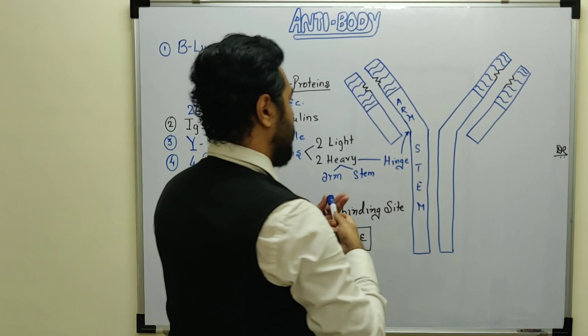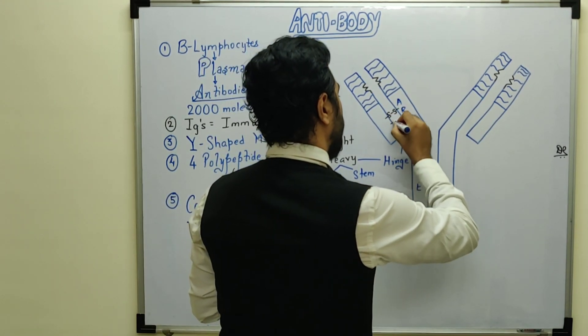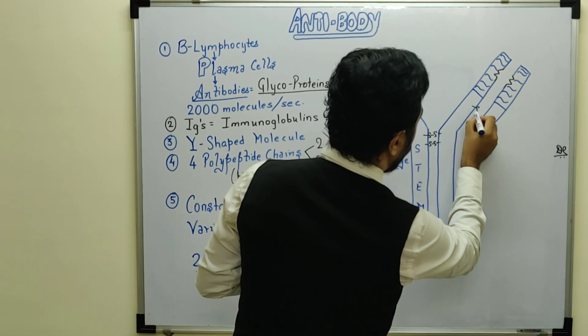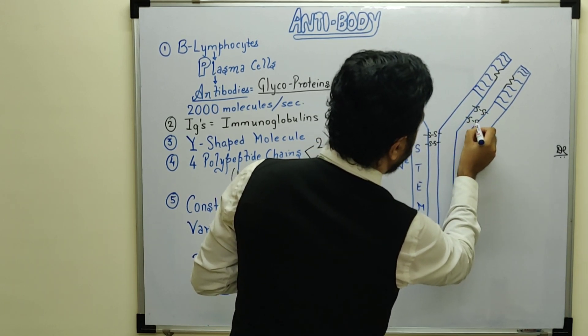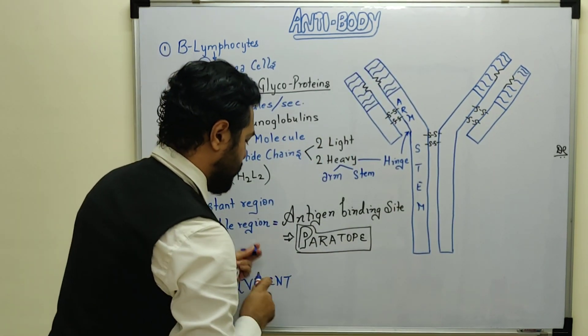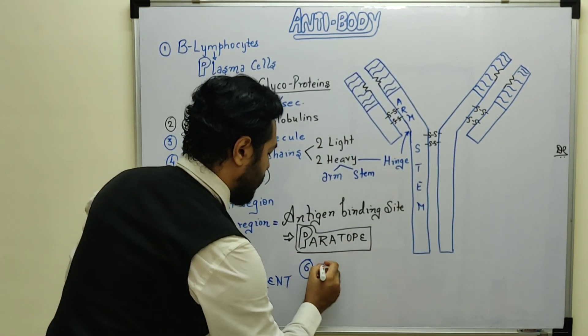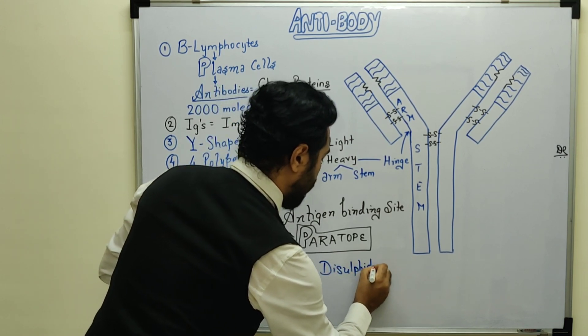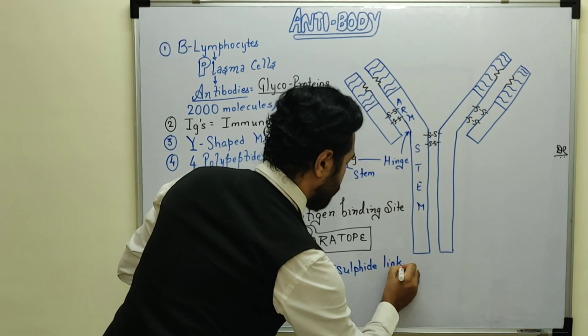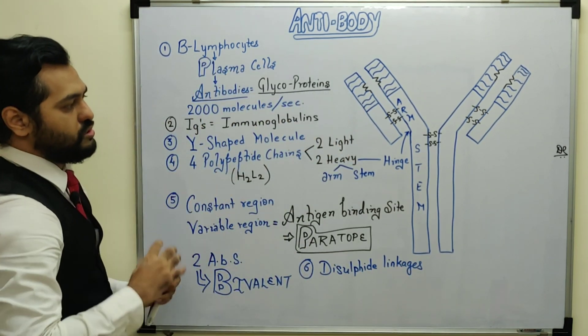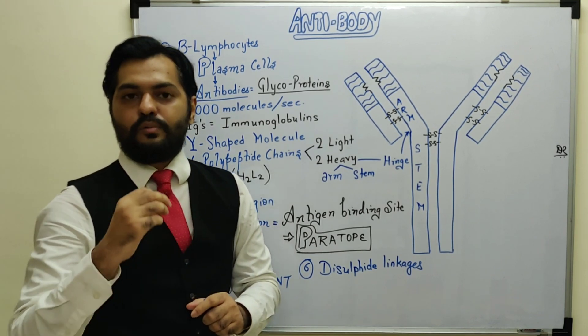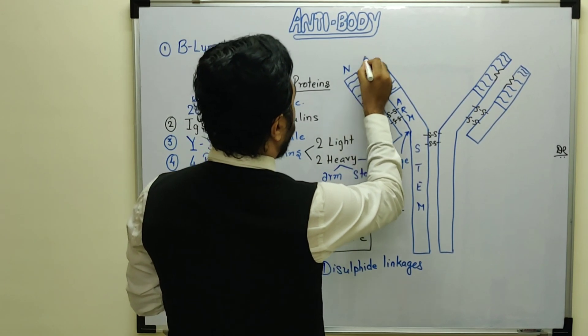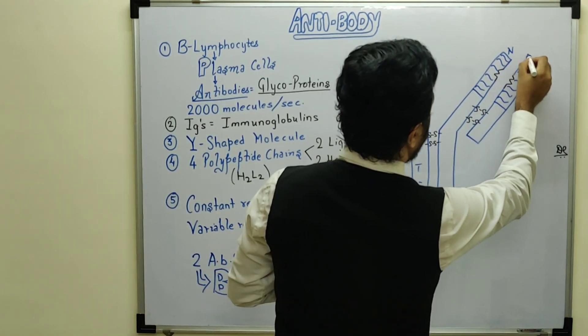Polypeptide chains have disulfide bonds. Here we have a disulfide bond representation. The polypeptide chains are joined by disulfide bonds or disulfide linkages.